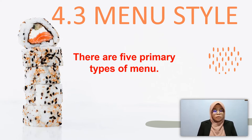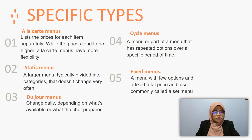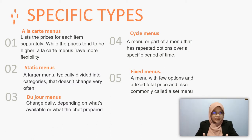There are five primary types of menu. The first is the à la carte menu, which lists the price for each item separately. While prices tend to be higher, the à la carte menu has more flexibility. Number two is the static menu — a large menu typically divided into categories that doesn't change very often. Number three is the du jour menu, which changes daily depending on what is available or what the chef prepares. Number four is the cycle menu — a menu or part of a menu that has repeated options over a specific period of time. Lastly, the fixed menu is a menu with few options and a fixed total price, also commonly called a set menu.